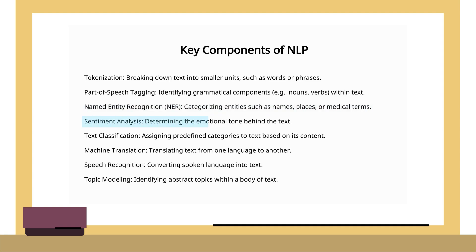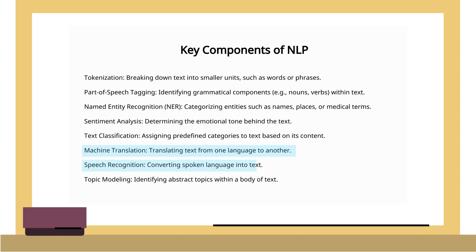Sentiment analysis determines the emotional tone behind the text, while text classification assigns predefined categories based on content. Other critical components include machine translation, speech recognition, and topic modeling, each contributing to how NLP processes and generates human language.